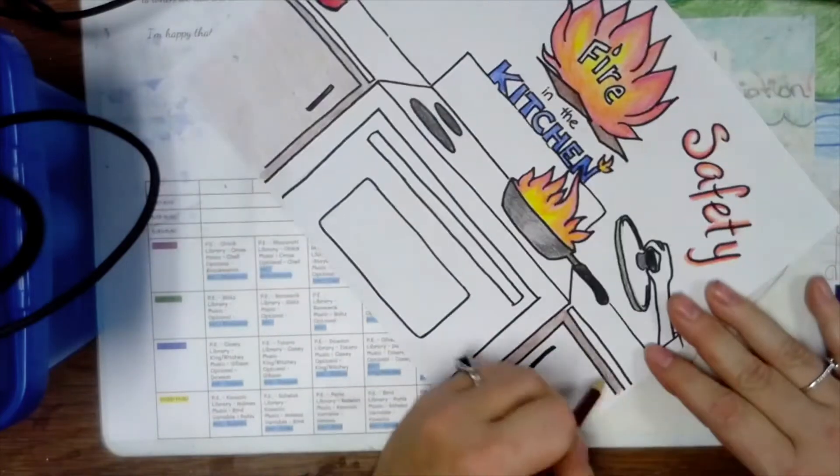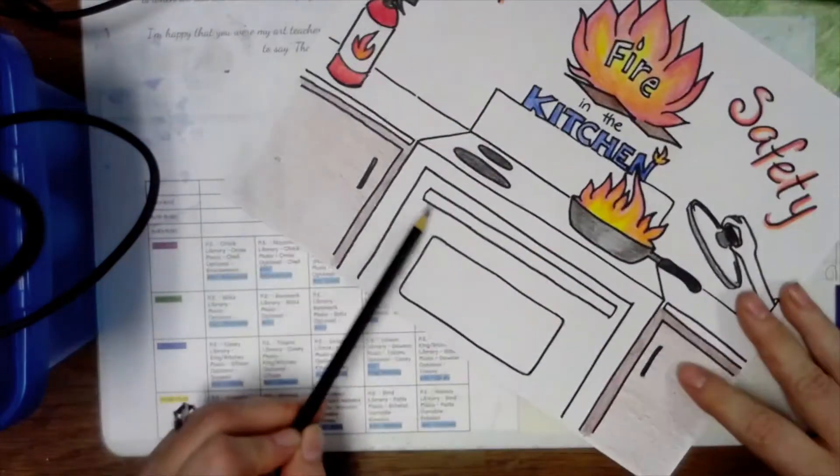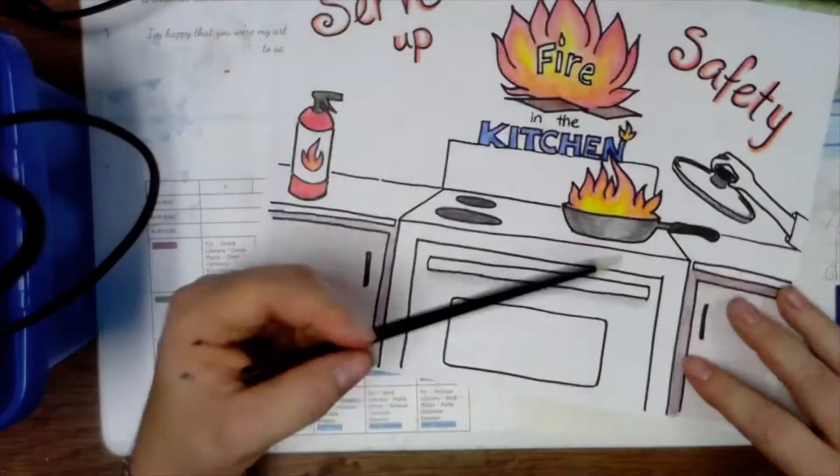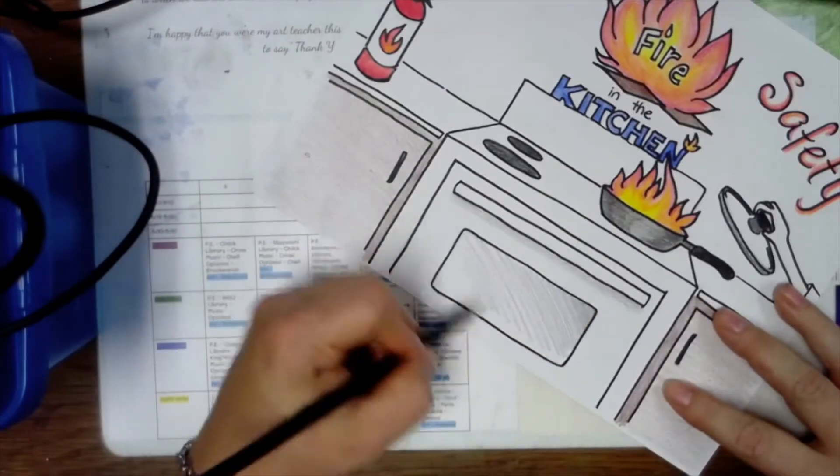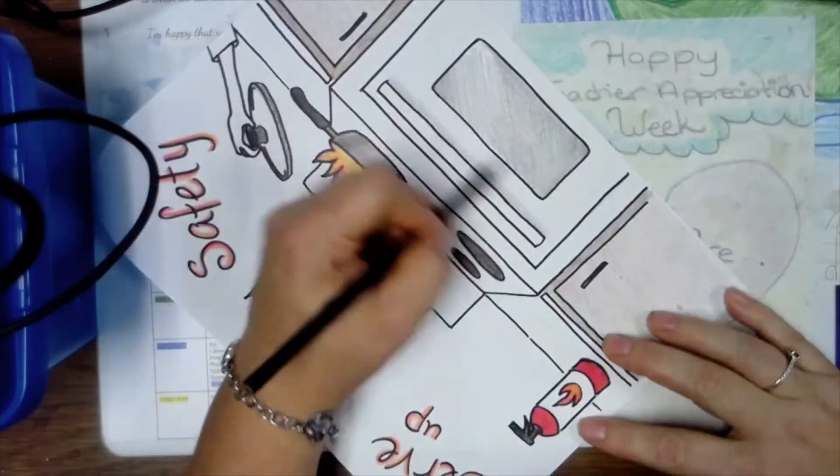Make sure when you're coloring, whether it's crayon or colored pencil or marker, just make sure you suck up all that white so that you make sure that it's a nice solid even color. That way it doesn't look scribbly—it's just better craftsmanship.